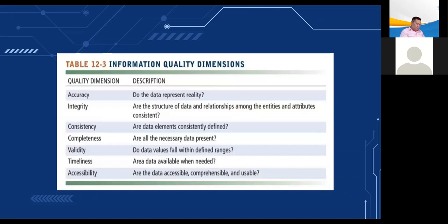Information quality dimensions include: accuracy — do the data represent reality? Integrity — are the structure of data and relationships among entities and attributes consistent? Consistency — are data elements consistently defined? Completeness — are all the necessary data present? Validity — do data values fall within defined ranges? Timeliness — are data available when needed? And accessibility — are the data accessible, comprehensive, and usable?